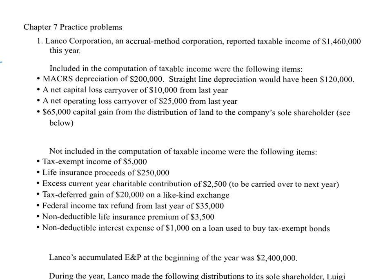What I like to do when I start these problems is go through all of the information and make notes along the side, and then I'll create my tabulated schedule going from taxable income to current earnings and profits. So we know they're an accrual method corporation and they report taxable income of $1.46 million. Our calculation of current earnings and profits starts with taxable income, so we absolutely need to pay attention to that.